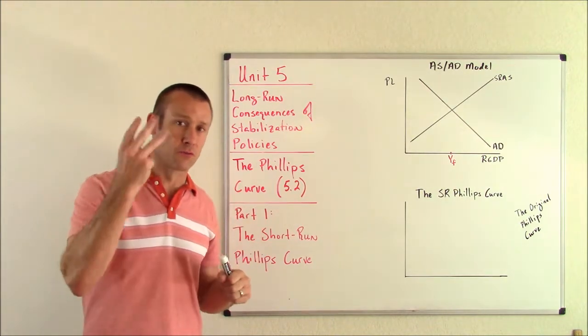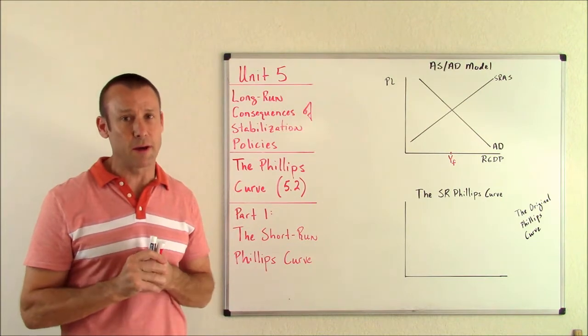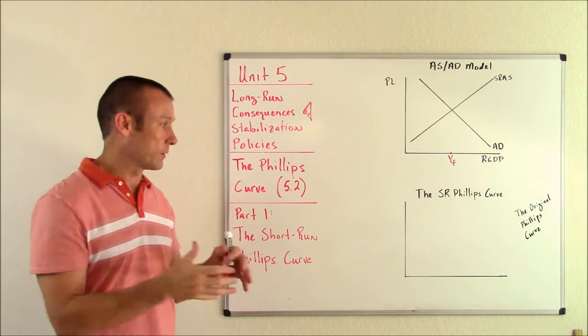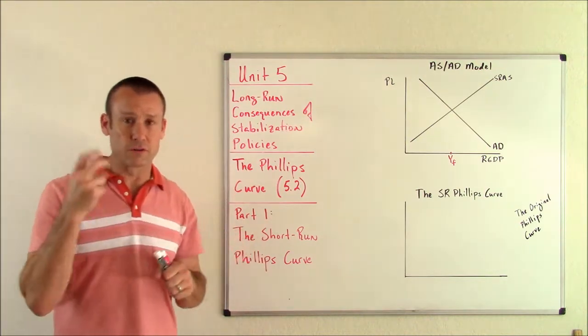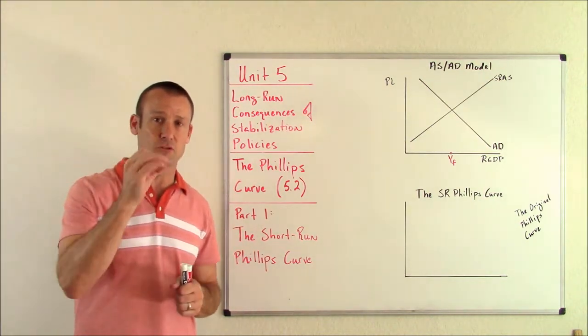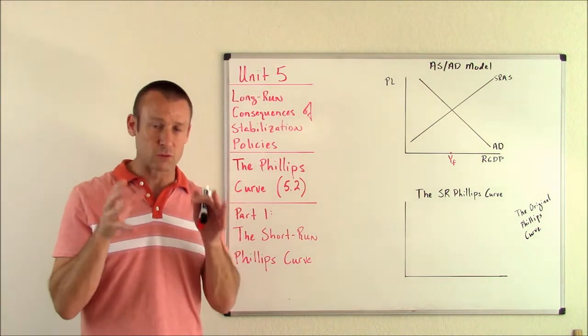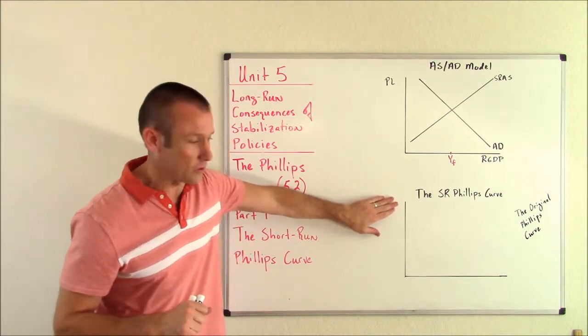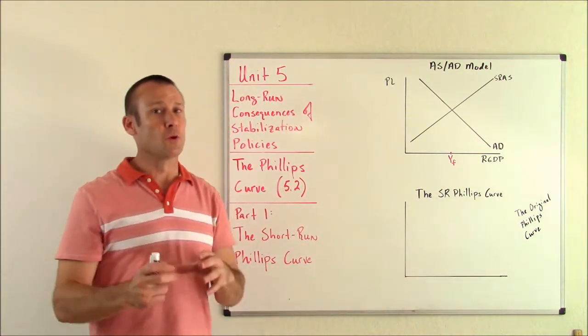That's super important. All the way back in Unit 2 we found out there are three things macroeconomists are obsessed about: GDP, the inflation rate, and the unemployment rate. So here we go, we're going to have a graph focused on two of those three things - the inflation rate and the unemployment rate.